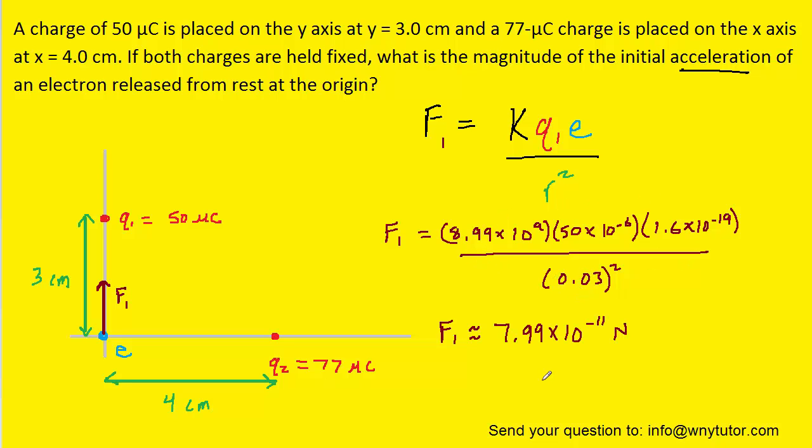When we calculate this, force 1 is approximately 8 times 10 to the minus 11 newtons. That's the attractive force pulling the electron upward.